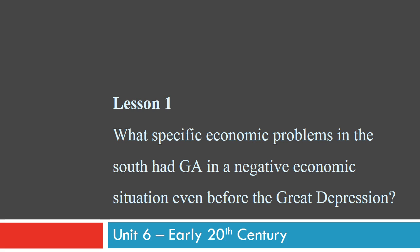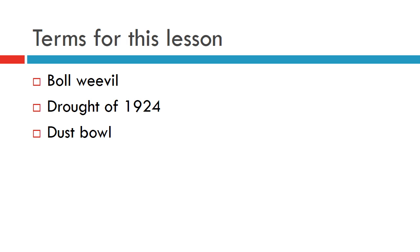For lesson one on unit 6, early 20th century, we're answering the question: what specific economic problems in the South had Georgia in a negative economic situation even before the Great Depression? The terms you need to know for this lesson are the boll weevil, the drought of 1924, and the Dust Bowl.